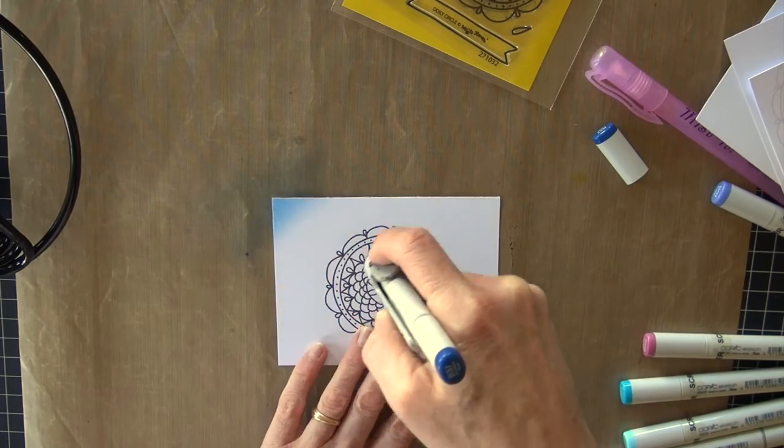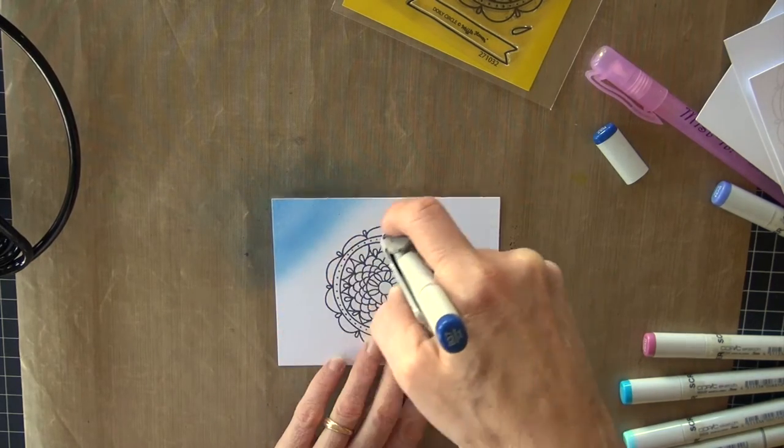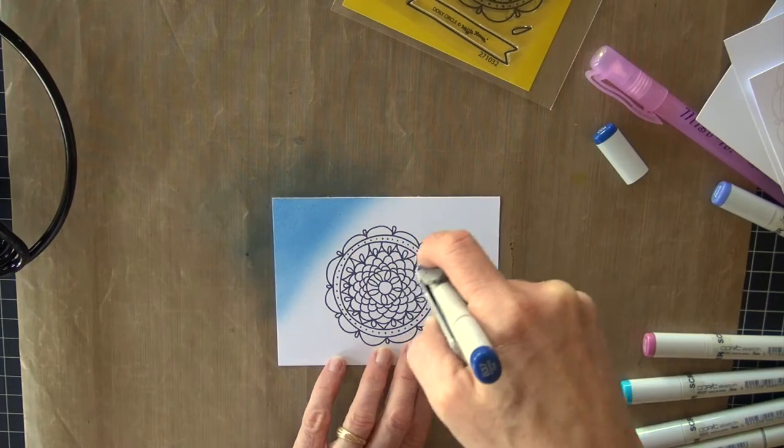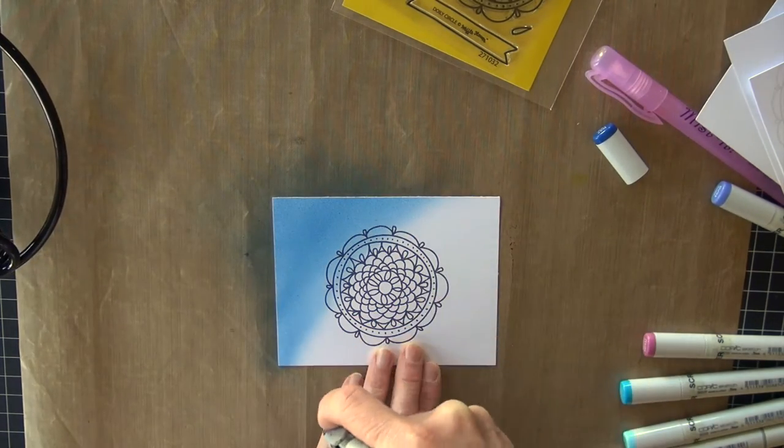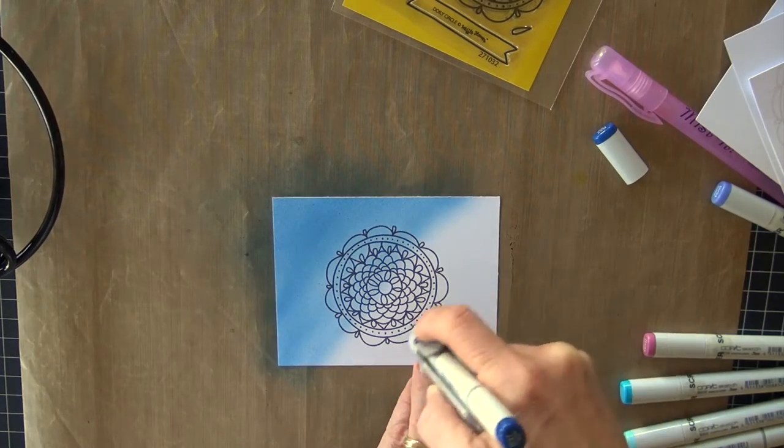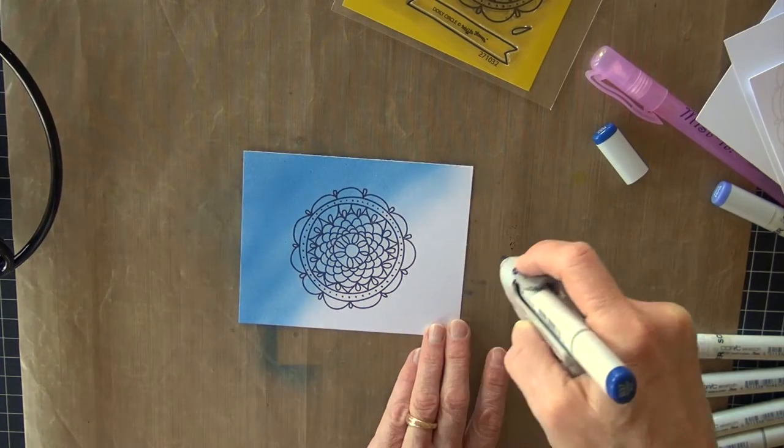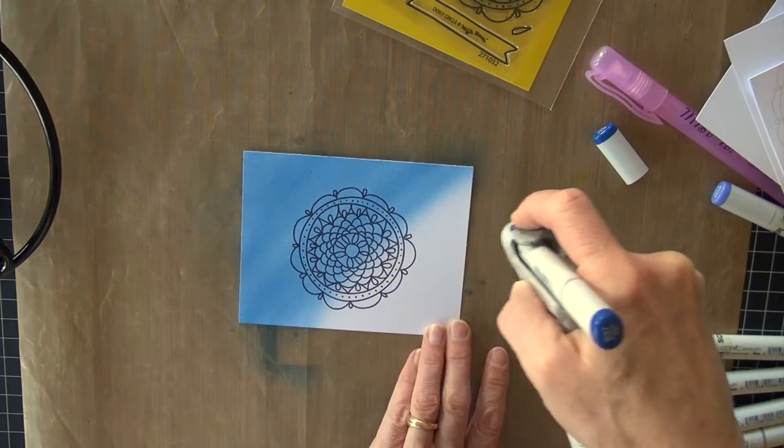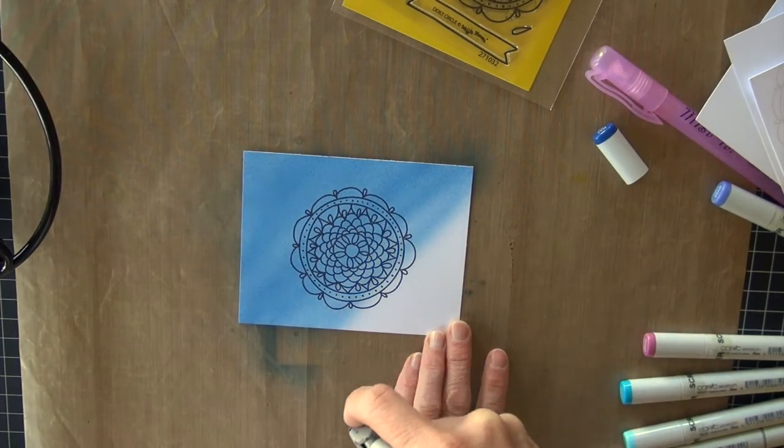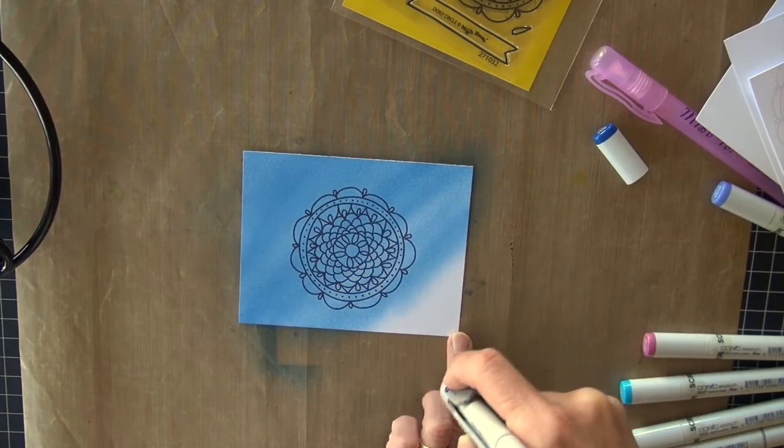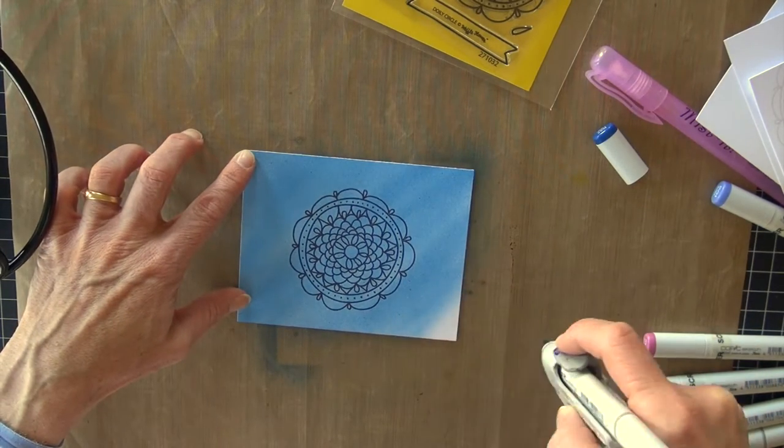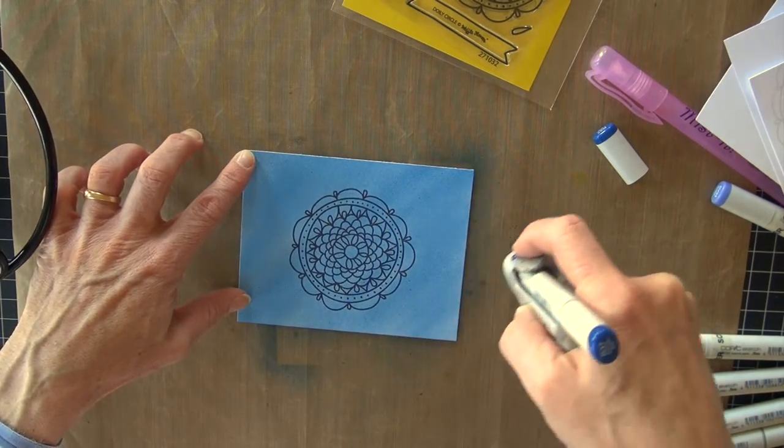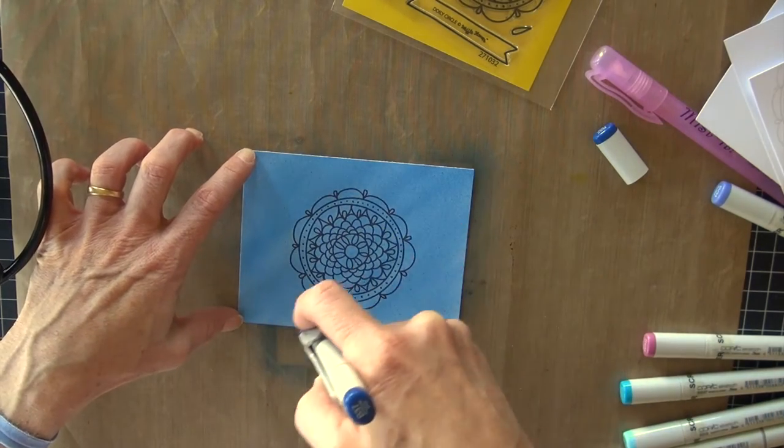So the only things you really need to notice here is that I'm extending beyond the paper. I'm actually going fairly slow. With the fast forward, it's hard to tell that, but nice even strokes. I'm holding my gun about six to eight inches away from the paper. I can go back and get a more even coverage if I'm wanting to. But notice I go all the way, start from one end, and go all the way off the other side.